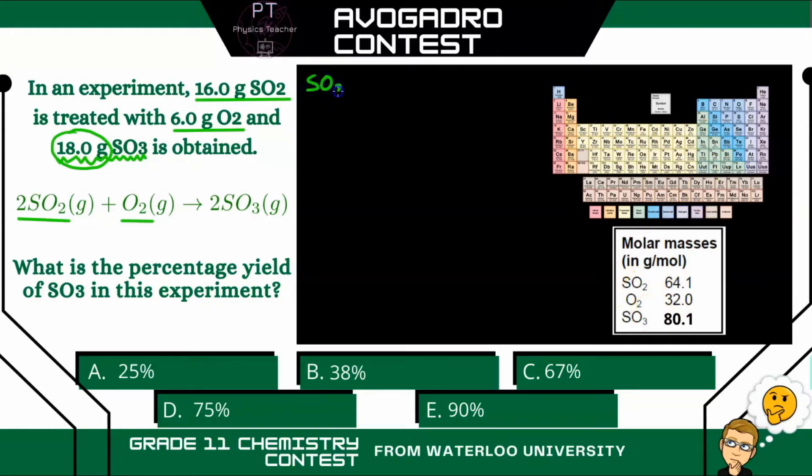So we don't have to actually add the individual molar masses of each element. So for SO2, we can calculate the number of moles by taking the mass, which is 16 grams, and dividing by the molar mass, which they give us as 64.1 grams per mole. So our grams cancel, and we end up with 0.25 moles.